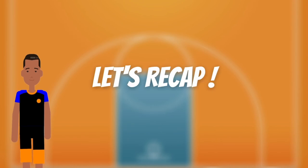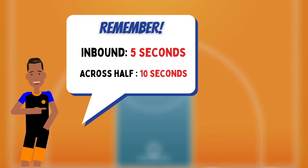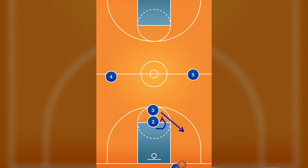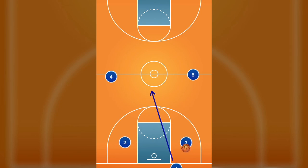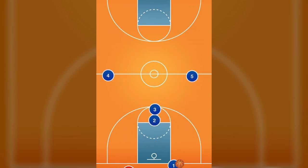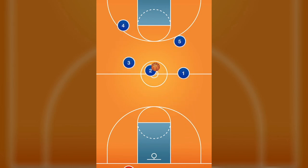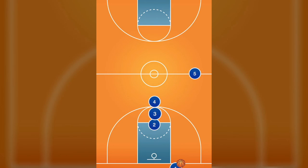Let's recap. 5 seconds to inbound and 10 seconds to cross half-court. Players can run the baseline after a made basket. Laker press break option 1. Laker press break option 2. Trips press break.